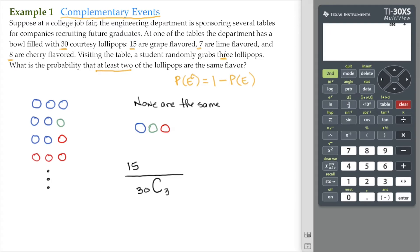Seven are lime flavored. Seven choose one. That's seven ways that one of them's lime. And of course, eight are cherry. Eight choose one. That's eight different ways you can grab a cherry one. And of course, according to the fundamental counting principle, 15 ways to grab a grape, seven ways to grab a lime, and eight ways to grab a cherry. We just multiply.